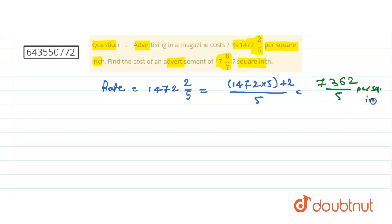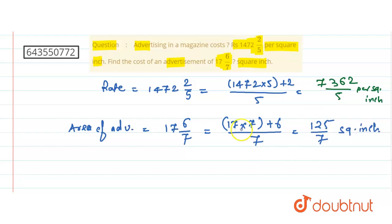Area of advertisement is simply 17 6/7, so this is equal to 17 times 7 plus 6 divided by 7. This is simply 125/7.